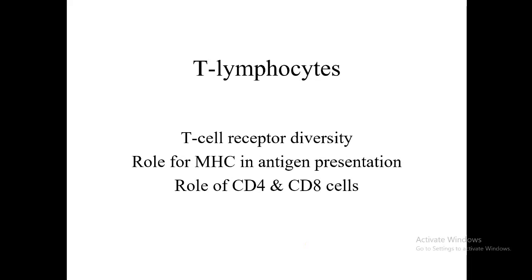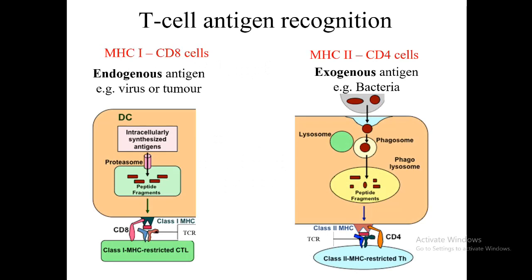Now we're going to focus on T lymphocytes. The aspects we'll cover include T cell receptor diversity — how T cells achieve T cell receptor diversity, which is done in a similar way to B cell receptor diversity — through the process of somatic recombination, junctional diversity. We'll also talk about the role of major histocompatibility complex in antigen presentation for T cells, the role of CD4 and CD8 T cells, and an overview of T cell maturation. We'll start with the basics of T cell antigen recognition.